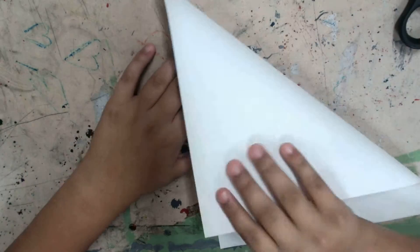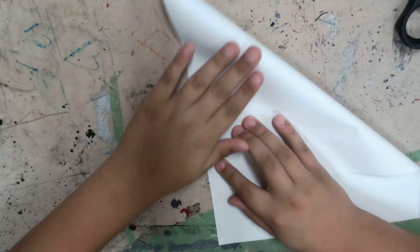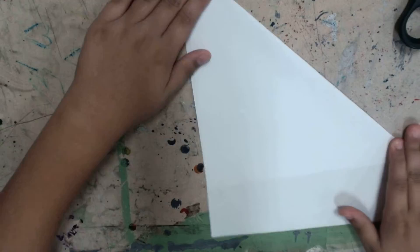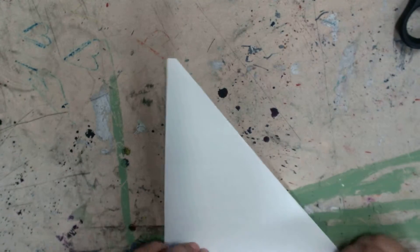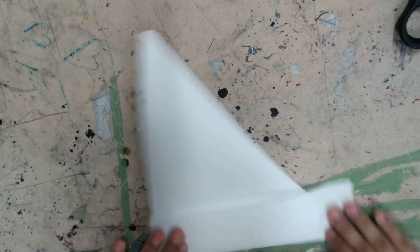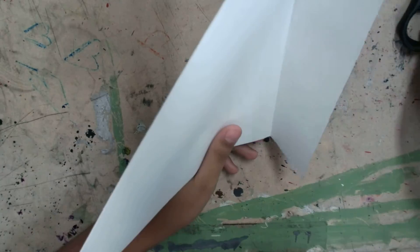First, you fold it over, and then it's a triangle. You fold this down. You fold this up. Then you get your scissors and cut across the line.